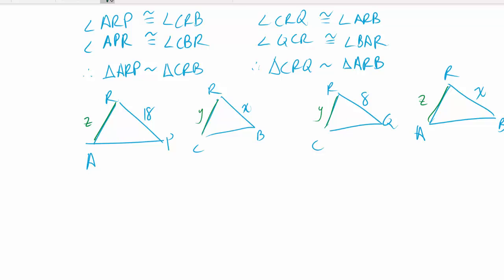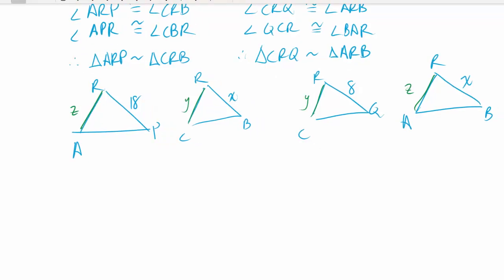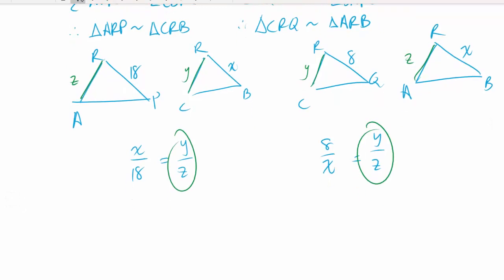So I've given those variables. And now I can do ratios for a set of ratios for each triangle. So I know that X over 18 equals Y over Z. And on the right, I'm going to do Y over X equals Z over Y. Actually, I'm going to do it the other way. I'm going to do that X over 18 equals Y over Z. And we notice that we have Y over Z on both of these ratios. And so Y over Z equals Y over Z. Therefore, X over 18 equals 8 over X.